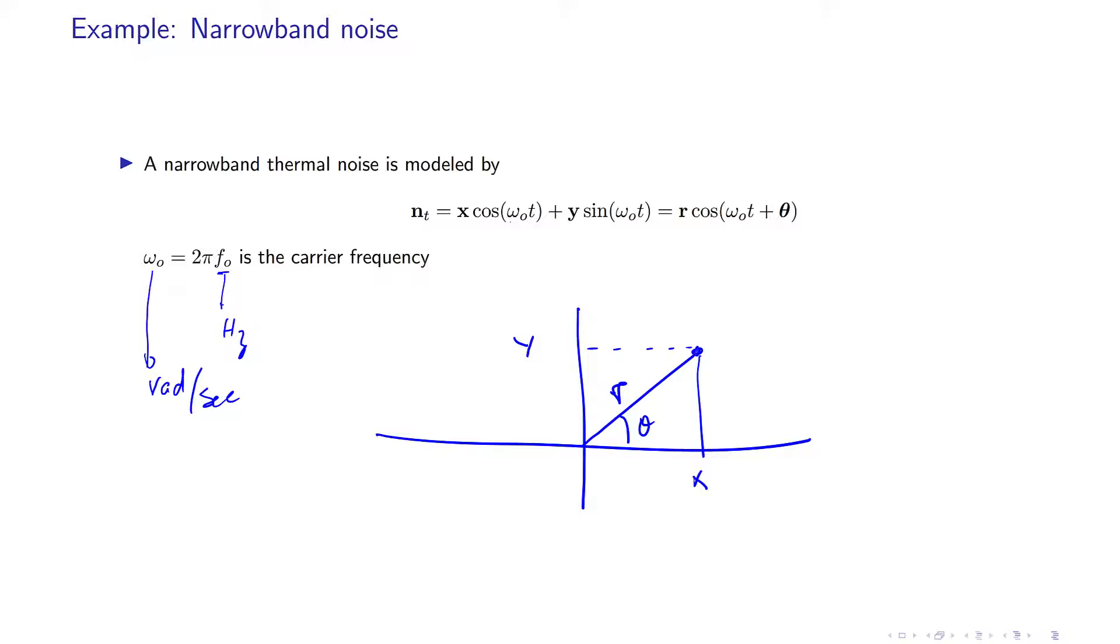Now if you consider this point and you start to rotate it around the circle f_0 times per second, or omega_0 radians per second.